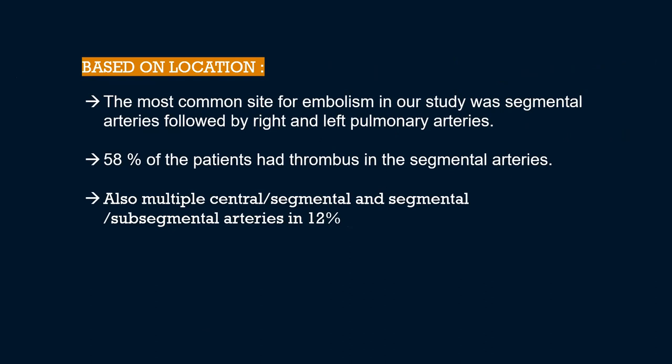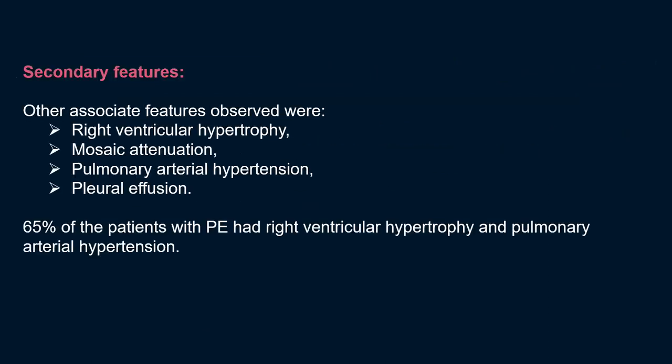Based on location, the most common site for embolism was the segmental arteries, followed by the right and left pulmonary arteries — 58% of patients had thrombus in the segmental arteries. Multiple central, segmental, and subsegmental arteries were involved in 12% of patients. Secondary features observed in patients with embolism included right ventricular hypertrophy, mosaic attenuation, pulmonary arterial hypertension, and pleural effusion, with 65% having right ventricular hypertrophy and pulmonary arterial hypertension.